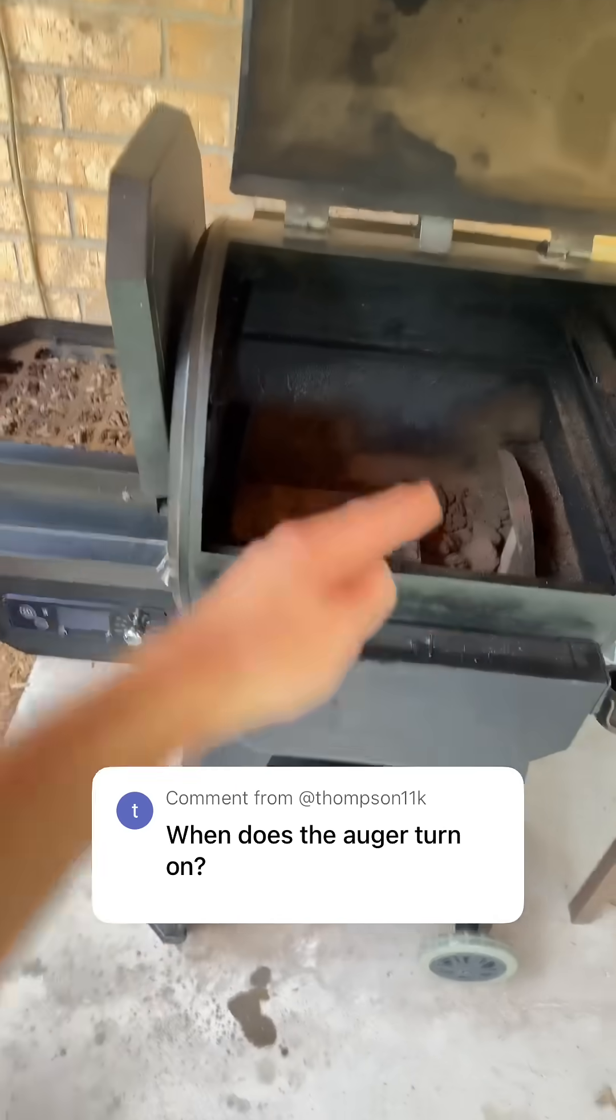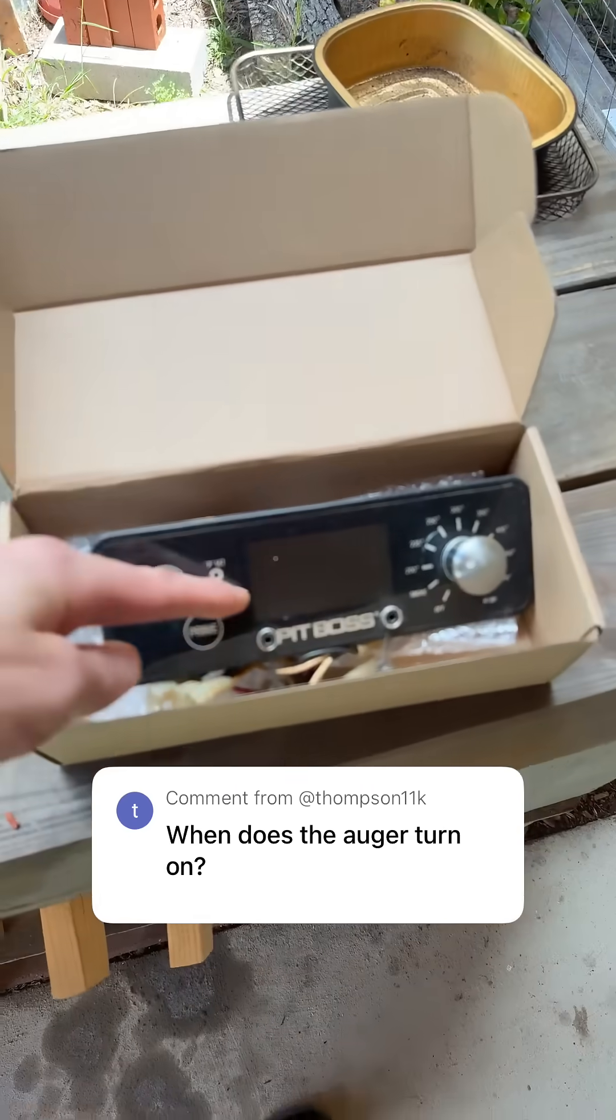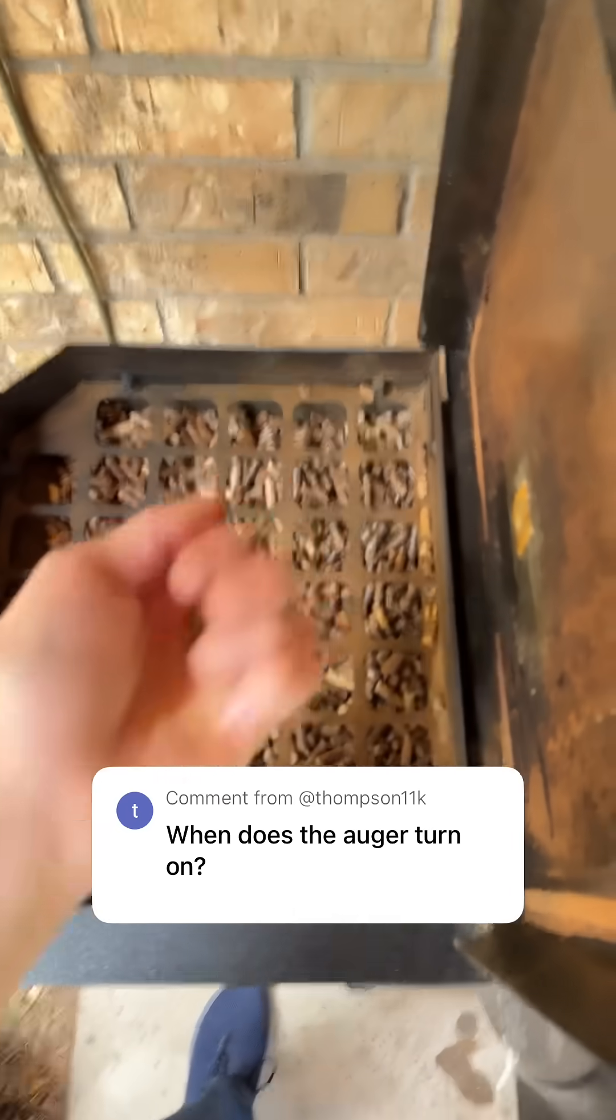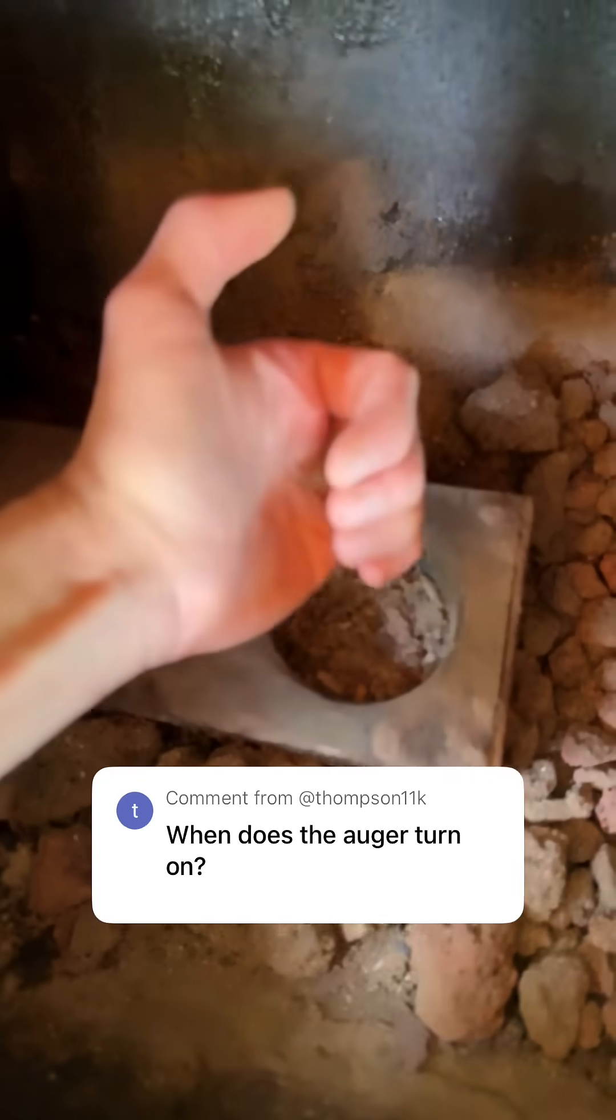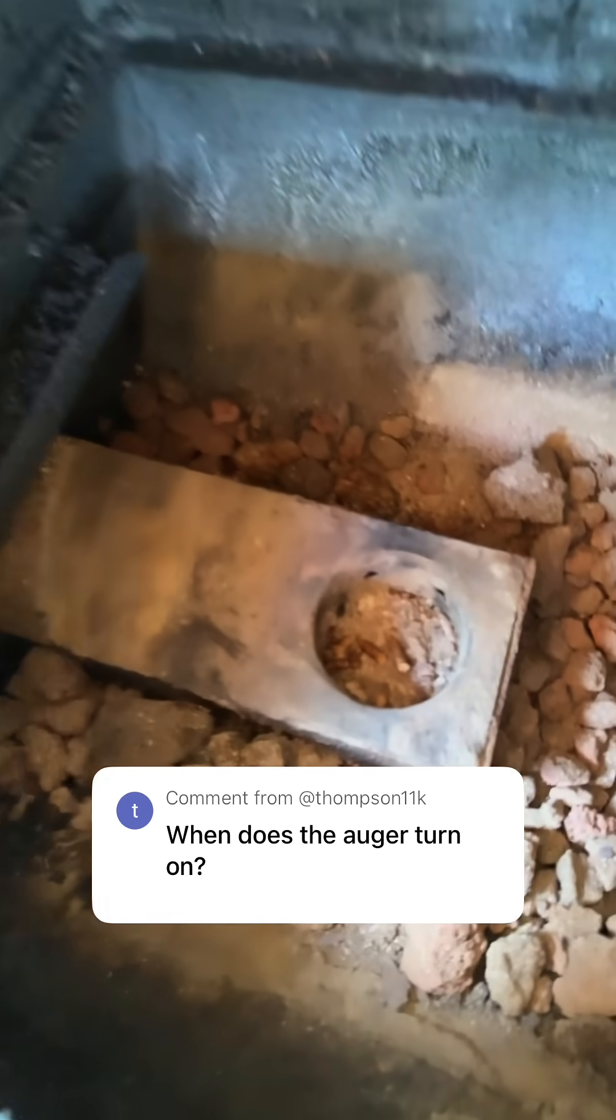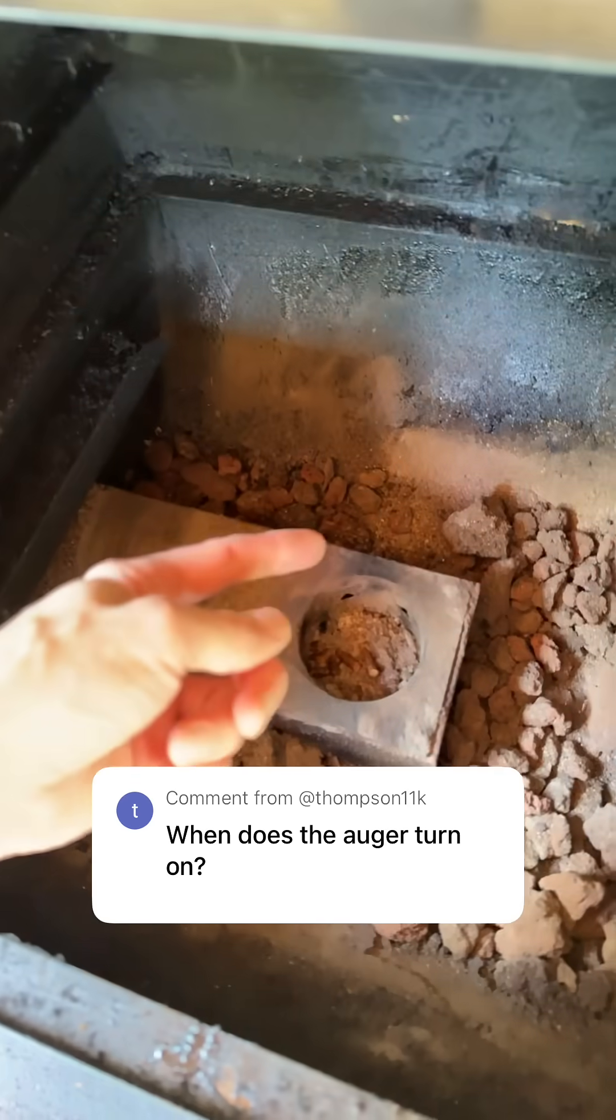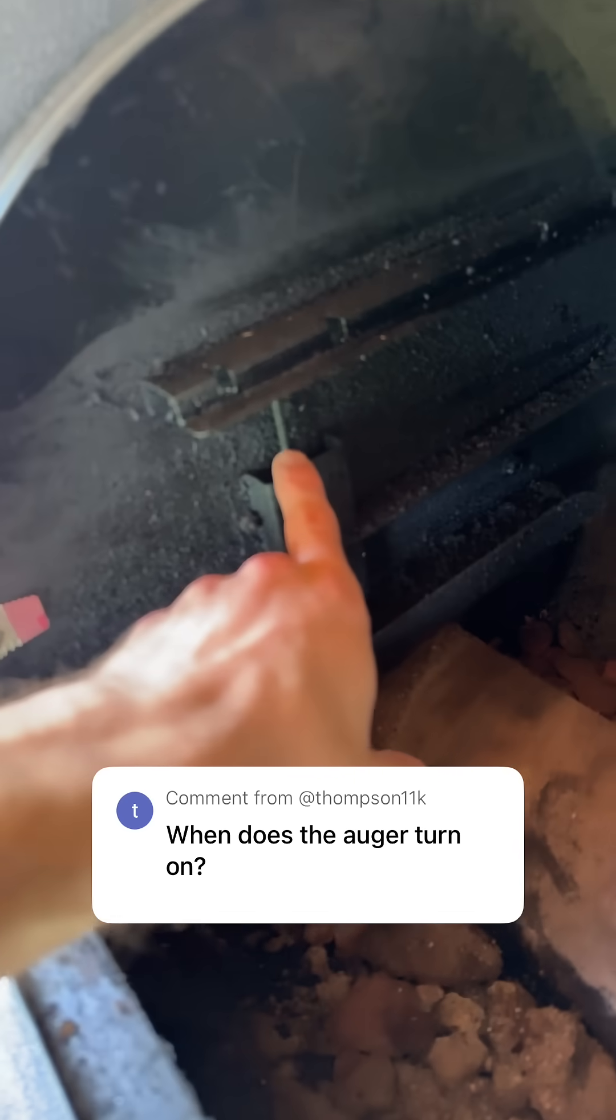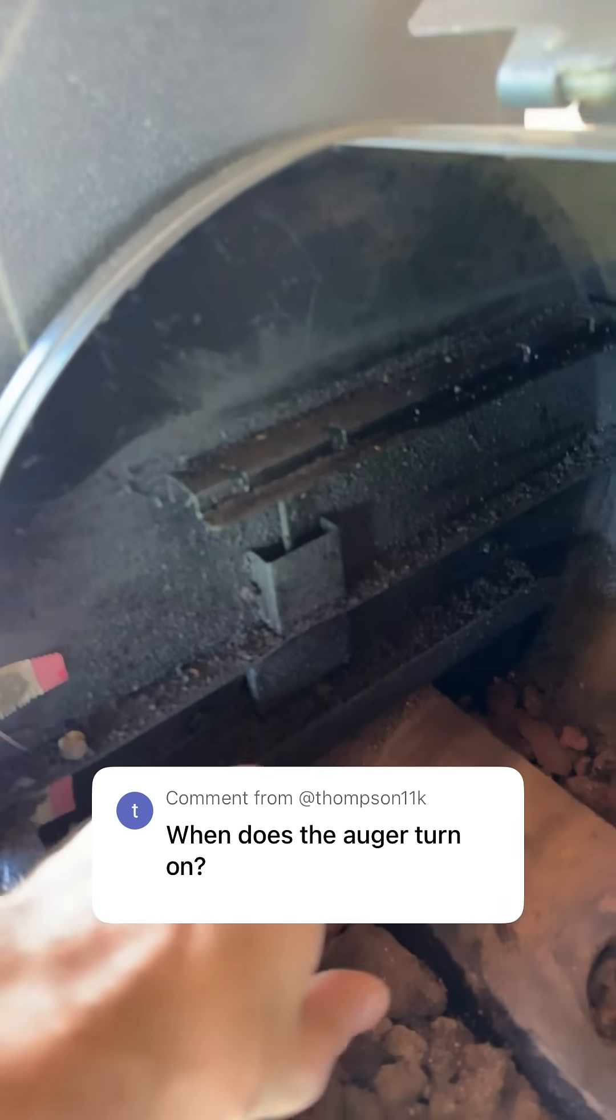For background information, the barbecue machine uses the controller. The controller tells the auger to turn on, which moves these pellets from in here to in here where the fire is present, adding fuel to the fire that raises the temperature that heats up this area that indicates a new temperature here on the temperature probe.